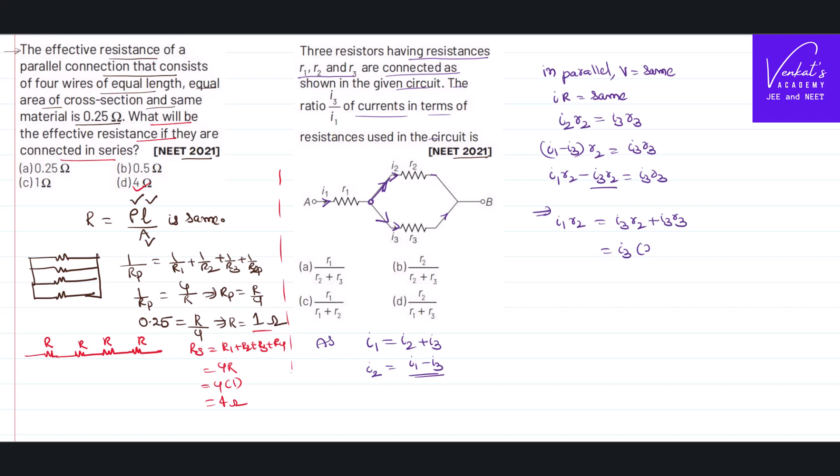i₃ can be taken common, then i₃(R₂ + R₃) = i₁R₂. That implies i₃/i₁—take this to this side and that to this side—equals R₂/(R₂ + R₃). That's the answer.